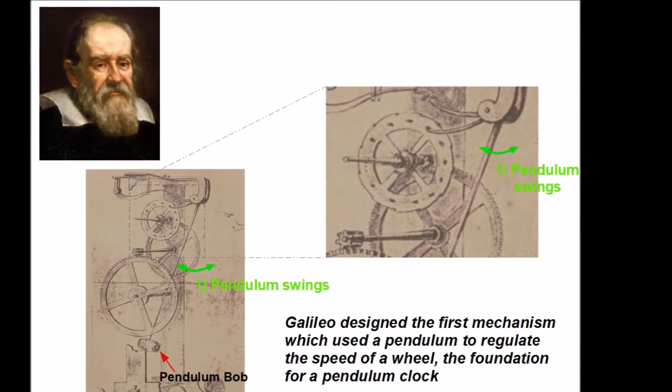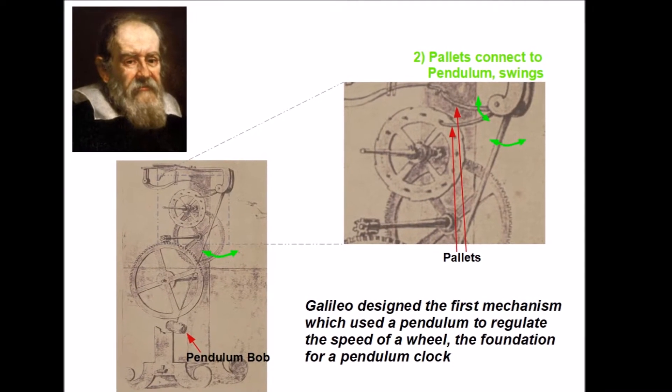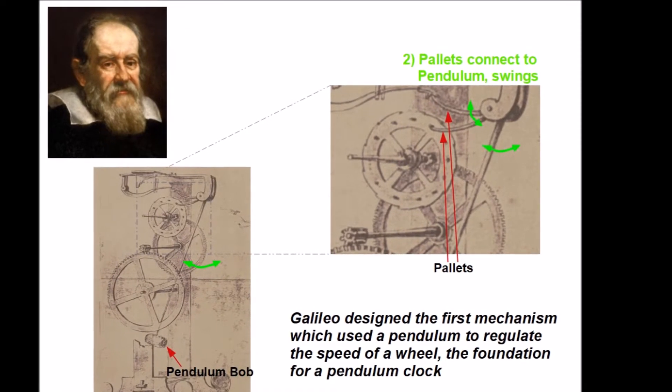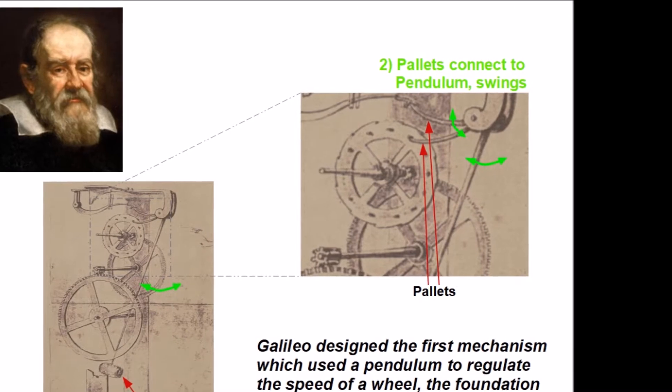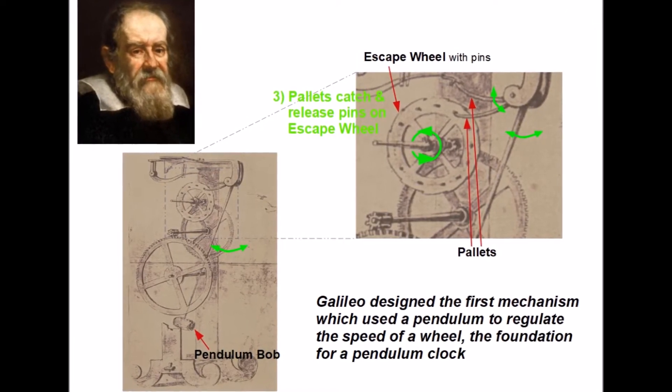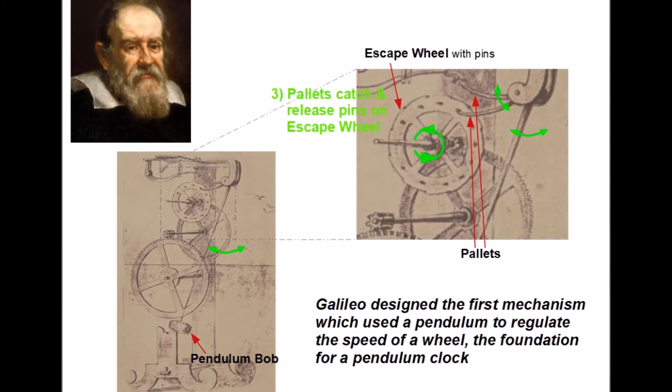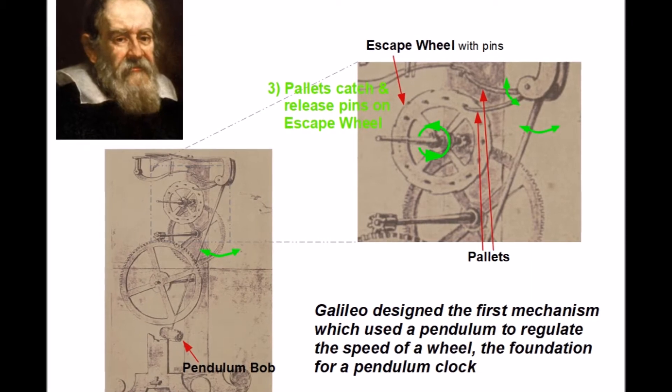The pendulum would swing back and forth. At the top of the pendulum, two pallets were connected to the pendulum rod and they'd swing back and forth in unison. As the escape wheel would try to spin, the pallets would catch and release the pins on the escape wheel using the regulation of the pendulum to control the speed of spin of the escape wheel.